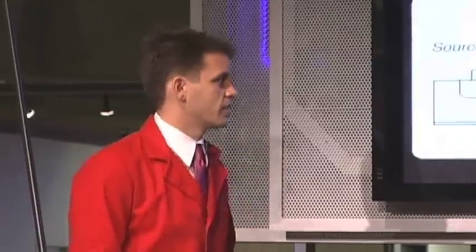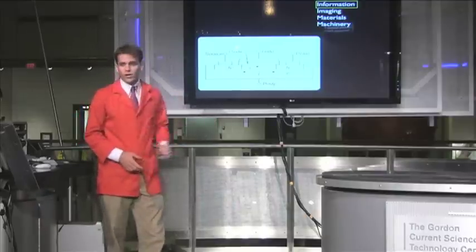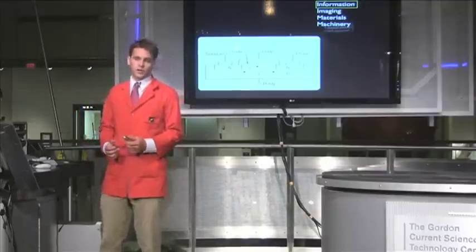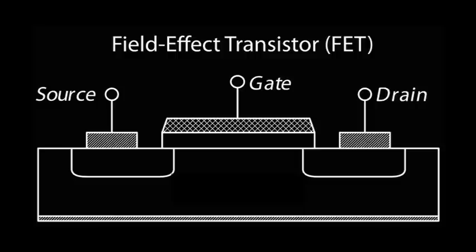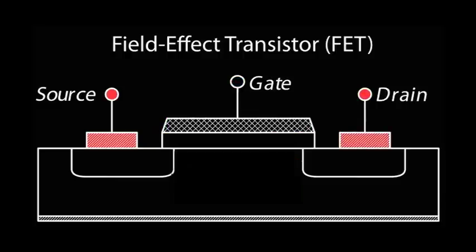And miniaturization also obviously has changed the way we process information, due largely to what I would argue is the most important invention of the 20th century, the field effect transistor. Now the transistor is the basis of computer processing technology. And it works in a simple way. It controls a flow of electricity from the source to the drain by the application of an electrical voltage to this thing called the gate. It's a switch, basically.